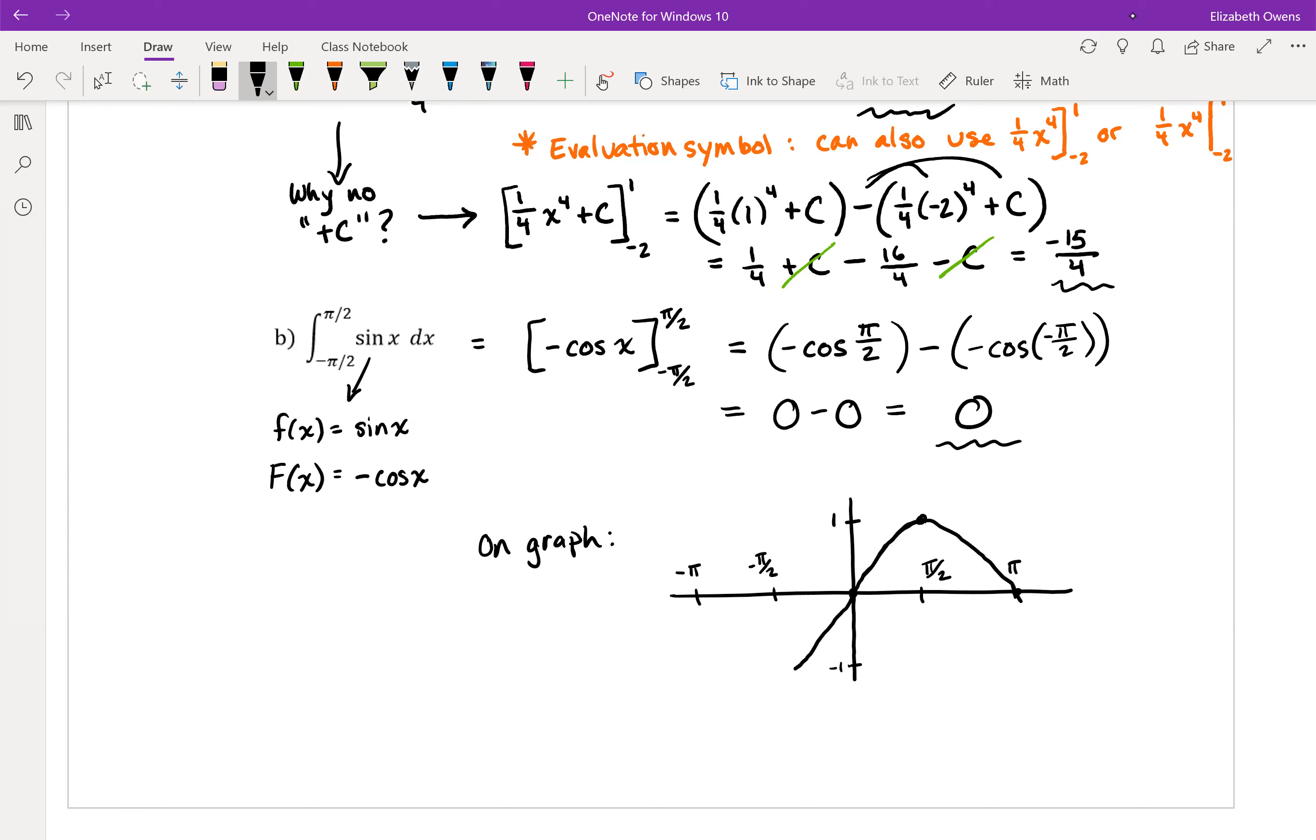And so this would be the portion of the sine curve that we're looking at there. And then we can complete one period of the sine function. So there's our sine function, and we are looking at the integral of this function from negative pi over 2 to positive pi over 2.